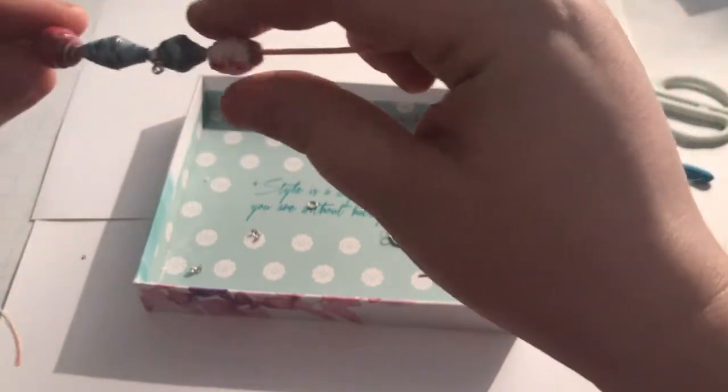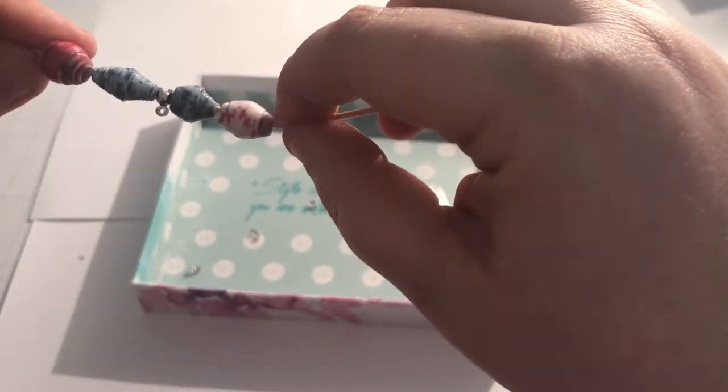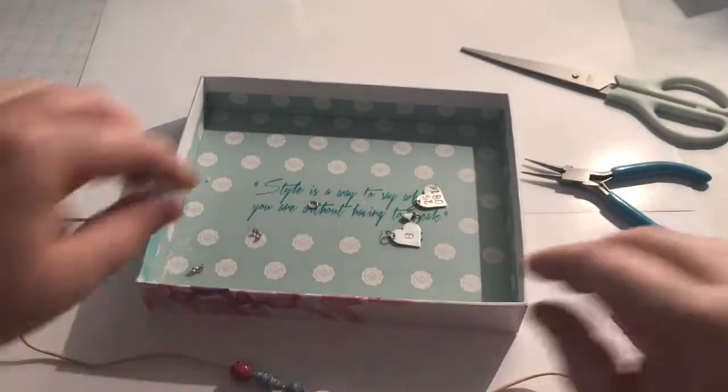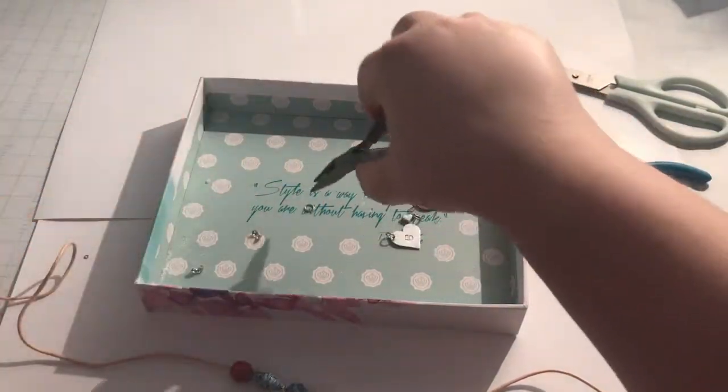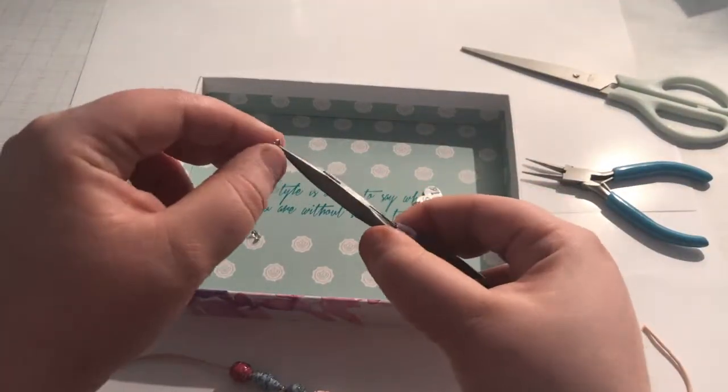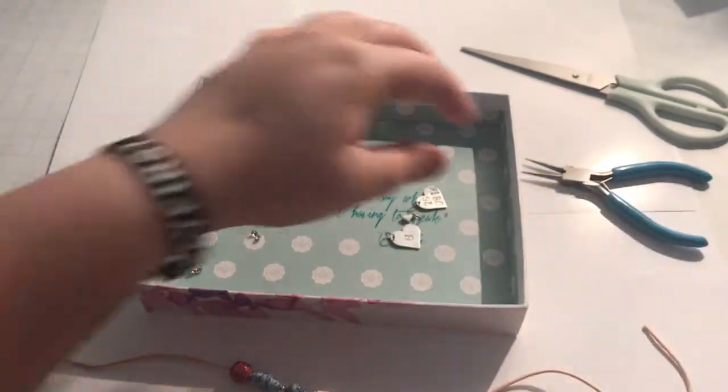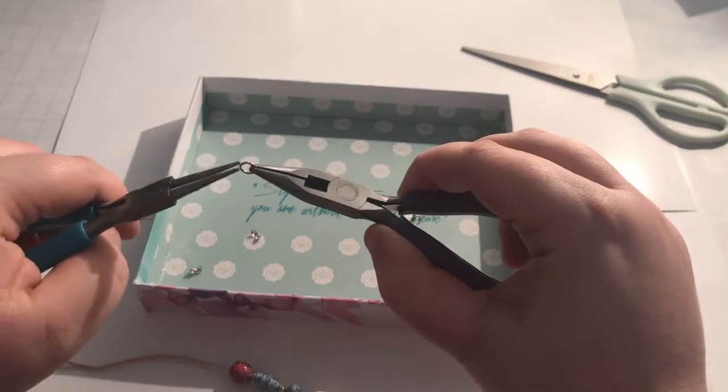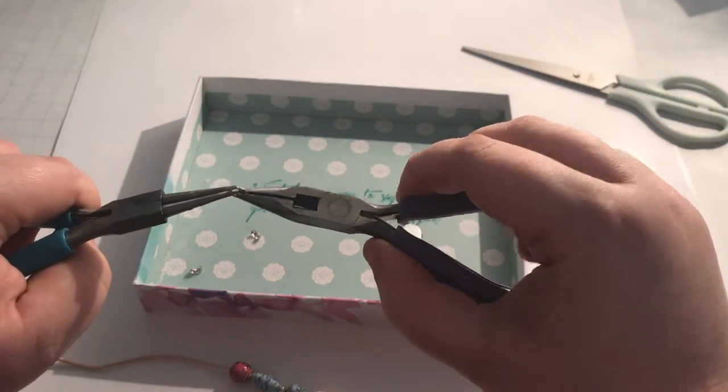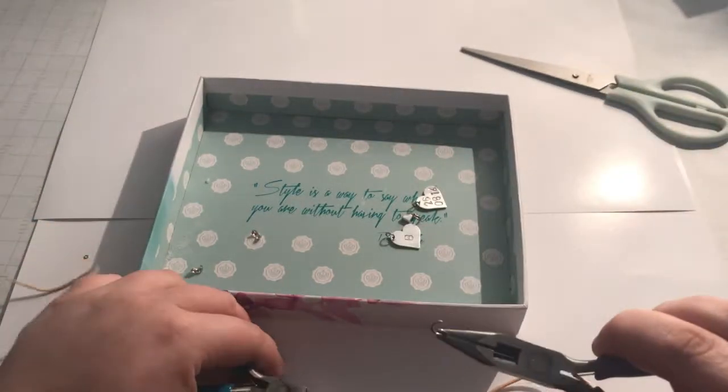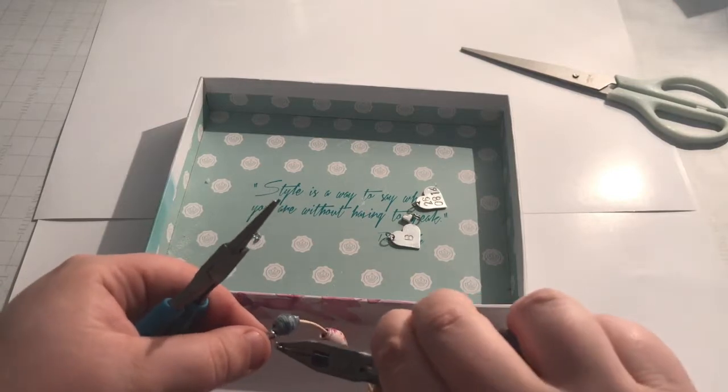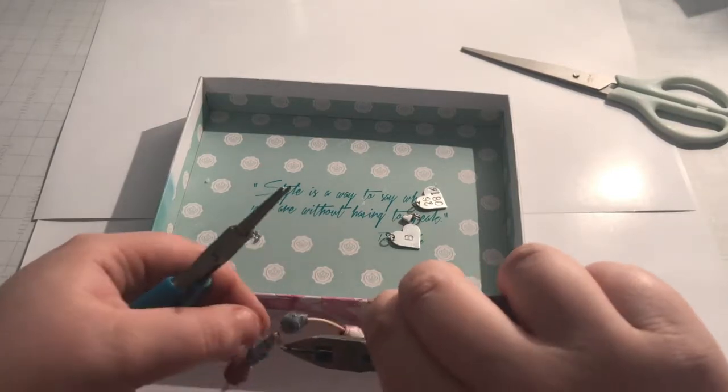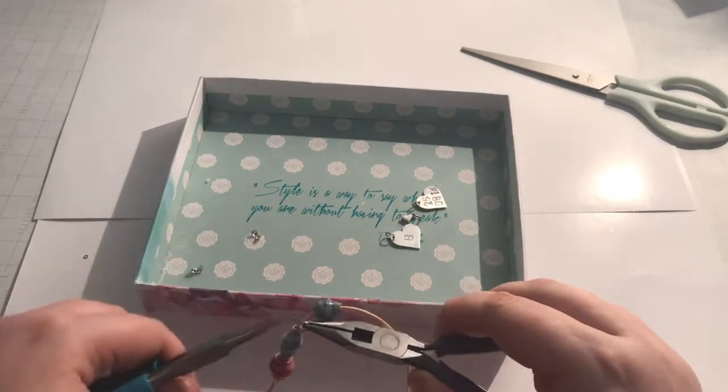Now to the middle hook, the middle eyelet there that you can see, you're going to attach the last remaining jump ring that we have. You just grab your pliers and open it, twist it sideways. Never open it by pulling it apart. You always twist it sideways.